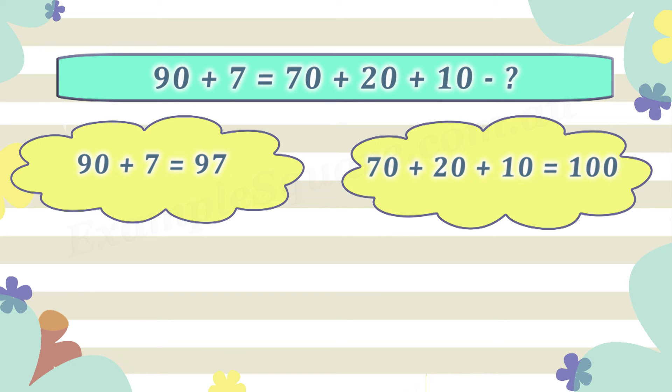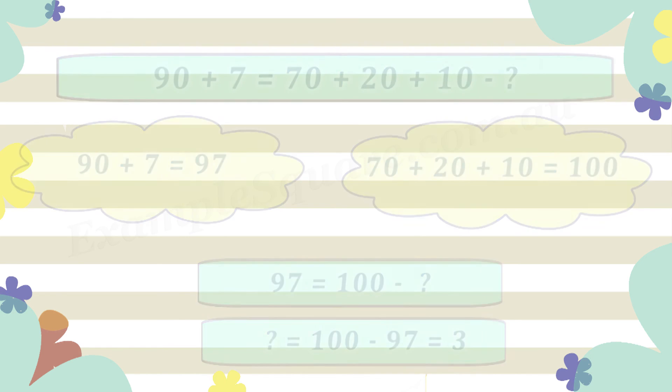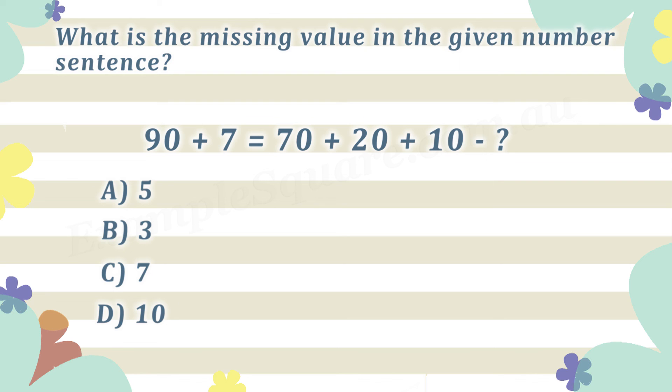So the right side is equal to 100 minus the unknown value. The equation can thus be written as 97 is equal to 100 minus the unknown value, so the unknown value should be equal to 3. Choice B is the correct answer.